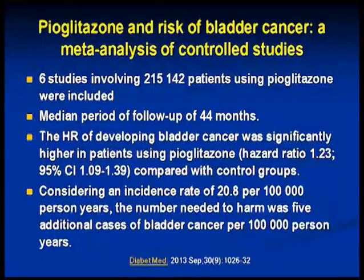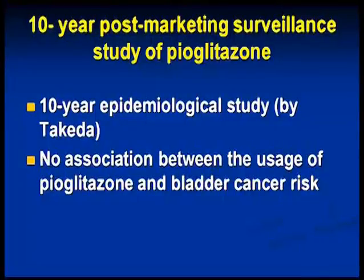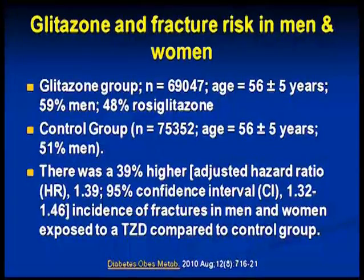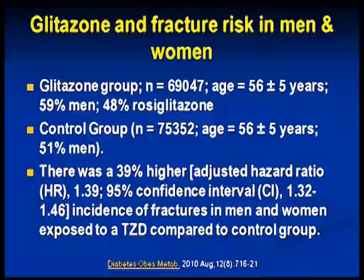The bottom line is that 10-year epidemiological data showed no association between pioglitazone usage and bladder cancer risk — so we can be reassured about that. But the other disadvantages remain with glitazone alone. The fracture risk data from almost 7,000 individuals with an equally large control group showed an almost 40% higher incidence of fractures in both men and women exposed to thiazolidinediones.